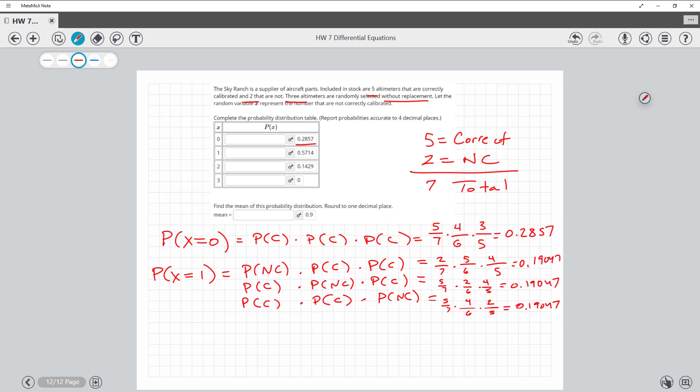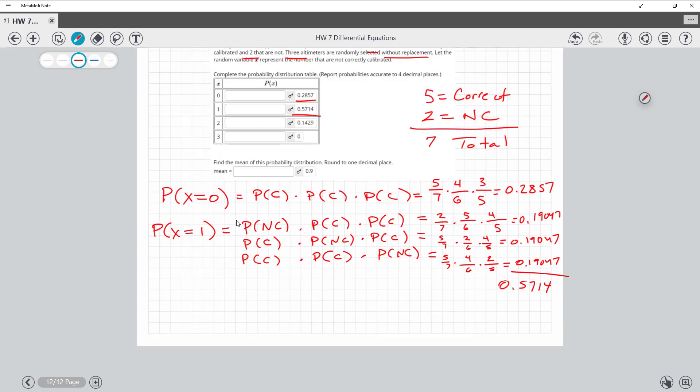So you can now add those, or what you could have done is you could have just simply take the 0.19047 and multiplied it by three, and guess what you get? You get that value right there. So this is where it gets a little trickier is you have to recognize the order.